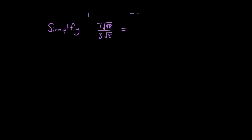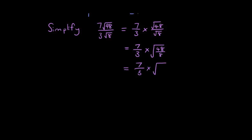So I have 7 times the square root of 48 over 3 times the square root of 8. I'm going to split it up into 7 over 3 times the square root of 48 over the square root of 8. Then 7 over 3 stays where it is, and the square root of 48 over 8 — I'm going to put it inside one whole square root. 48 divided by 8 is 6, so the answer is 7 over 3 times the square root of 6, and that is the final answer because 6 cannot be simplified any further.